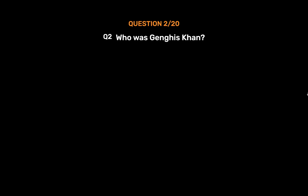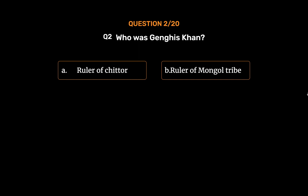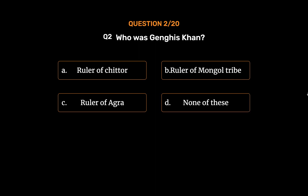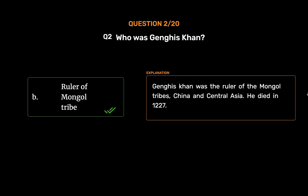Question 2: Who was Genghis Khan? Option A: Ruler of Chittad. Option B: Ruler of Mongol tribe. Option C: Ruler of Agra. Option D: None of these. The correct answer is Option B, Ruler of Mongol tribe. Genghis Khan was the ruler of the Mongol tribes, China and Central Asia. He died in 1227.